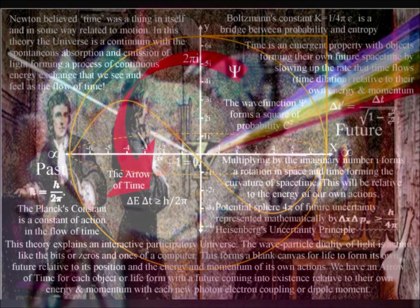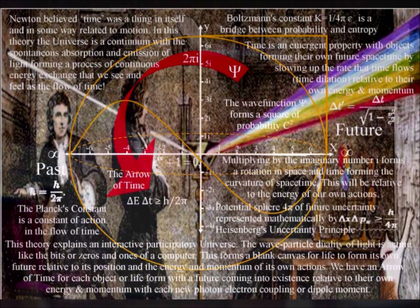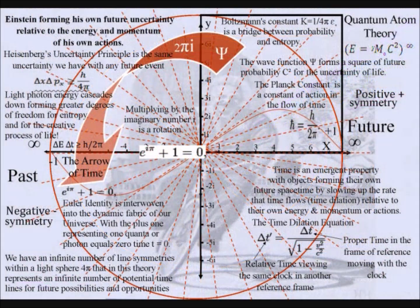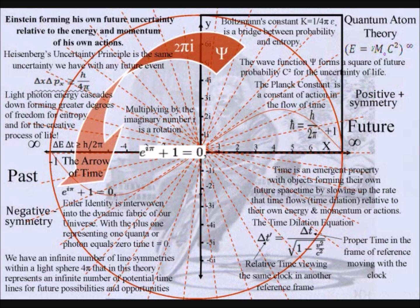Classical physics represents processes over a period of time as in Newton's differential equations. The future is unfolding photon by photon with the absorption and emission of light. At the most fundamental level, this can be represented as a process of spherical symmetry forming and breaking.